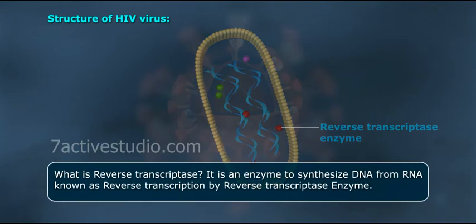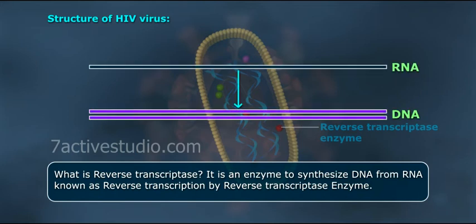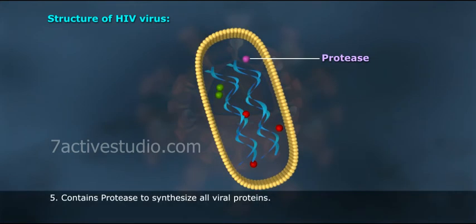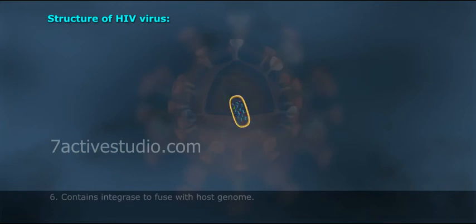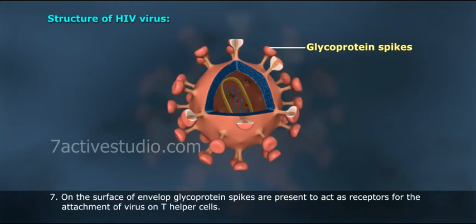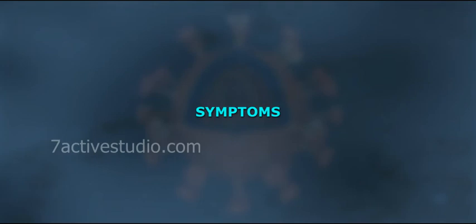What is reverse transcriptase? It is an enzyme that synthesizes DNA from RNA, known as reverse transcription. 5. Contains proteins to synthesize all viral proteins. 6. Contains integrase to fuse with the host genome. 7. On the surface of the envelope, glycoprotein spikes are present to act as receptors for the attachment of the virus on T helper cells.